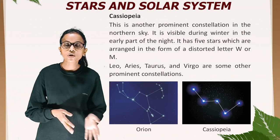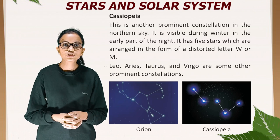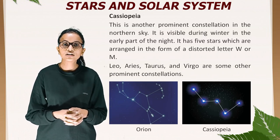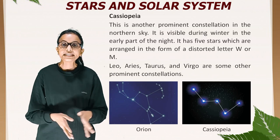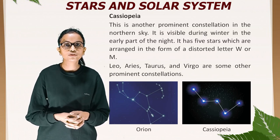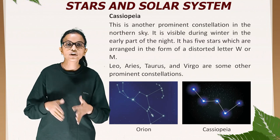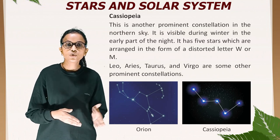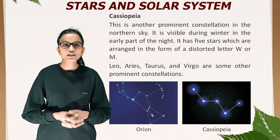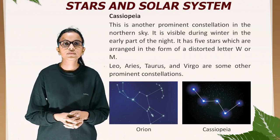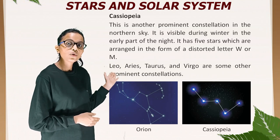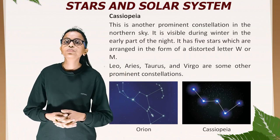Cassiopeia is another prominent constellation in the northern sky, visible during winter in the early part of the night. It has five stars arranged in the form of a distorted letter W or M. Leo, Aries, Taurus, and Virgo are some other prominent constellations.